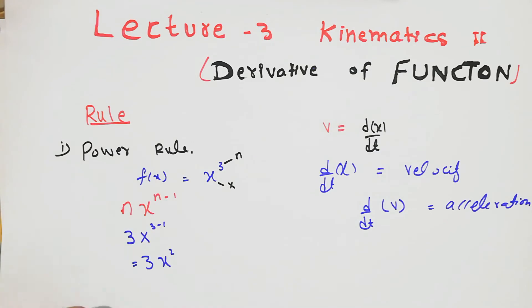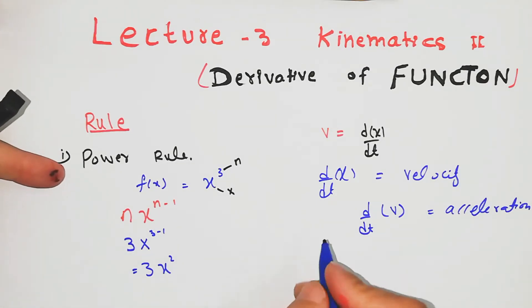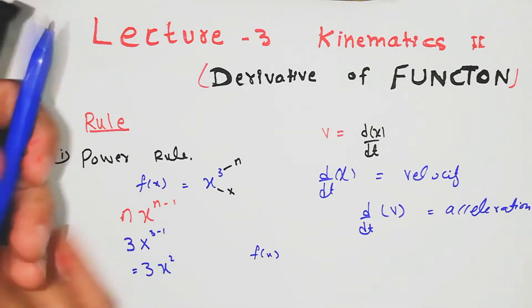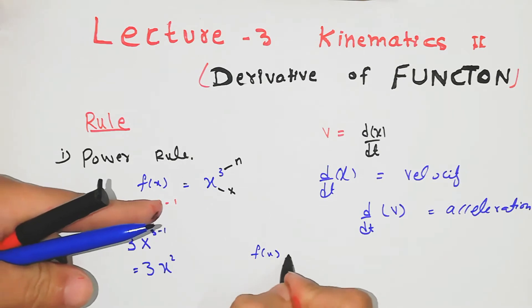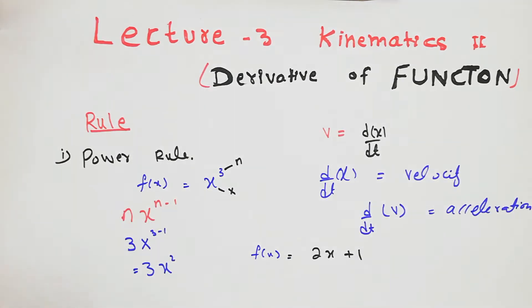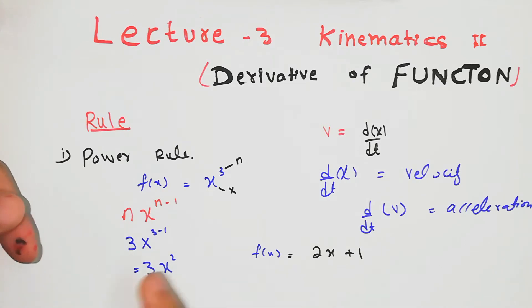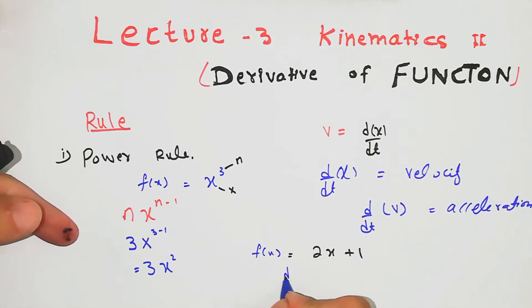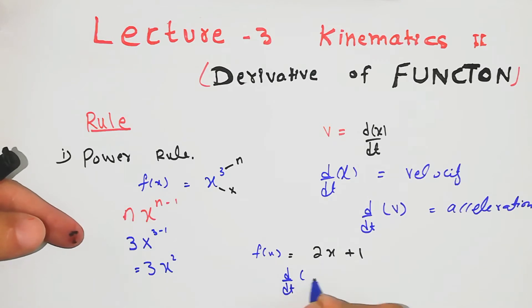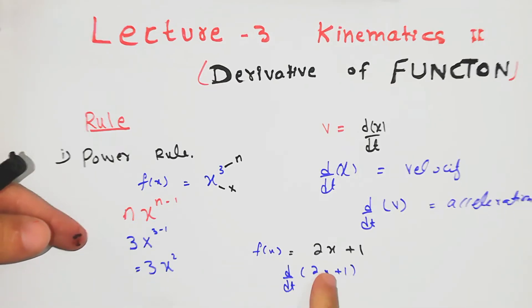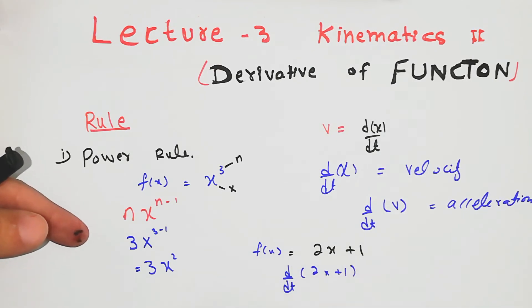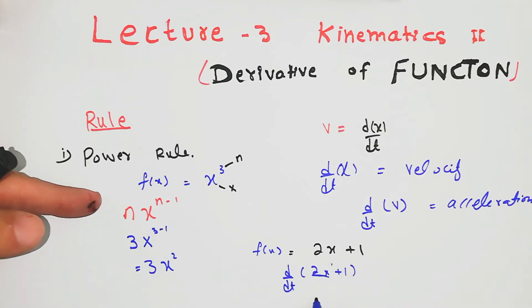I can solve this function using the power rule. Let's take a simple function f of x equals 2x plus 1. The constant derivative is zero, so we just deal with variables. Using d over dt, x power 1 becomes 2, and the constant derivative is 0, so I get 2.